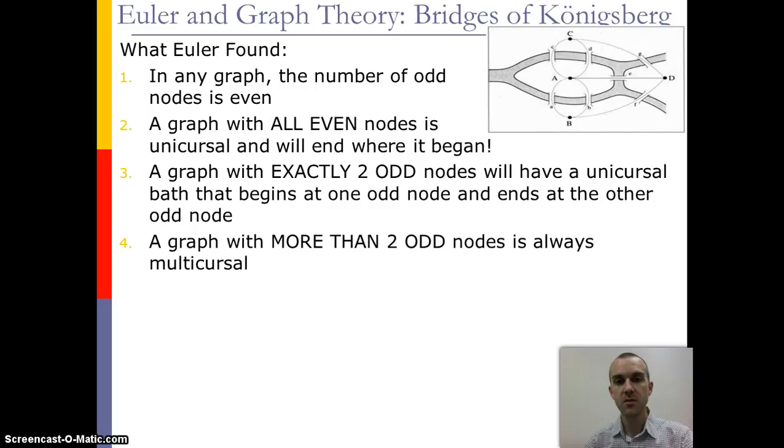If a graph has all even nodes, then it's automatically unicursal and it will end exactly where it began. If it has exactly two odd nodes, then it is possible to have a unicursal path that begins at one and will end at the other. But if a graph has more than two odd nodes, it's always multicursal.